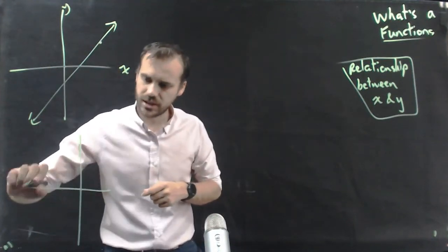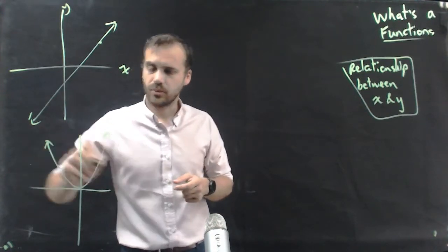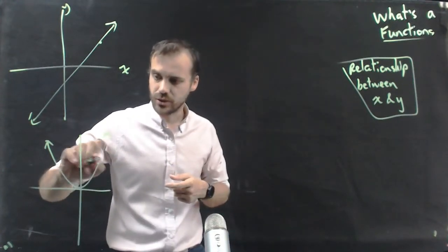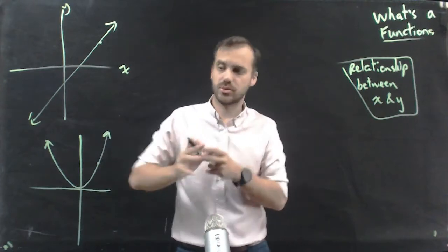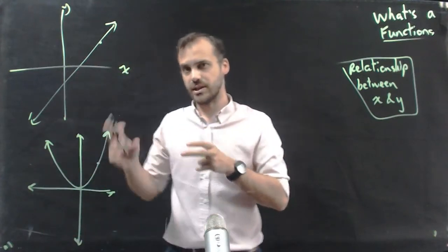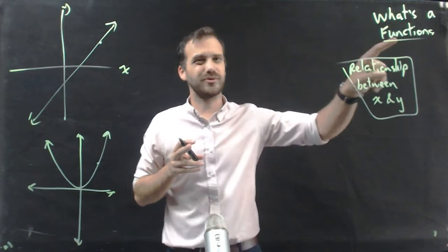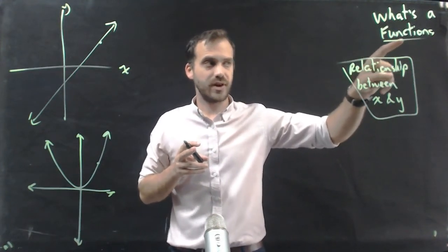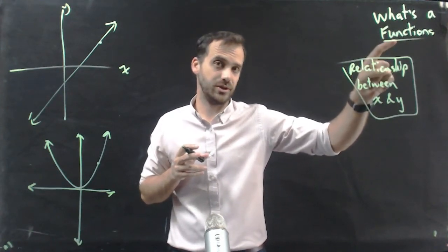You would have also seen a function that looks like y equals x squared — some sort of quadratic function. Again, if you know the x, you know the y. There is a relationship between the x-axis and the y-axis. All of this stuff that we put on Cartesian planes is a relationship between x and y. But not all of them are functions. A function is a relationship, but a relationship isn't necessarily a function.